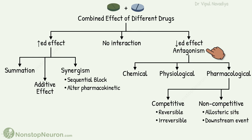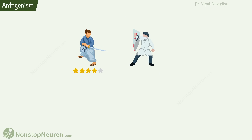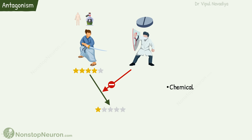Now let's talk about antagonism. Here one substance decreases the effect of the other one. Practically speaking, in these cases only one is an actual drug — the other is usually our endogenous molecule, or sometimes poison, whose activity we want to decrease. The antagonism may be chemical, physiological, or pharmacological.